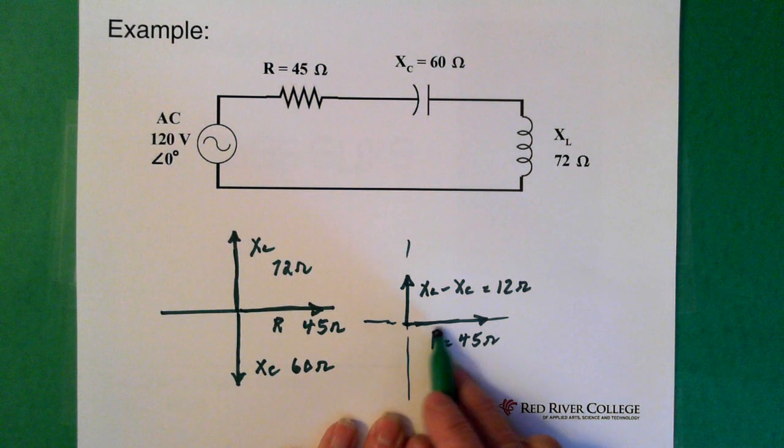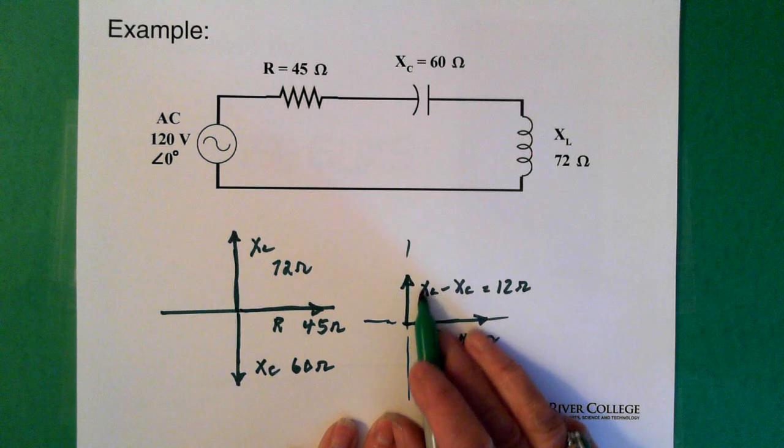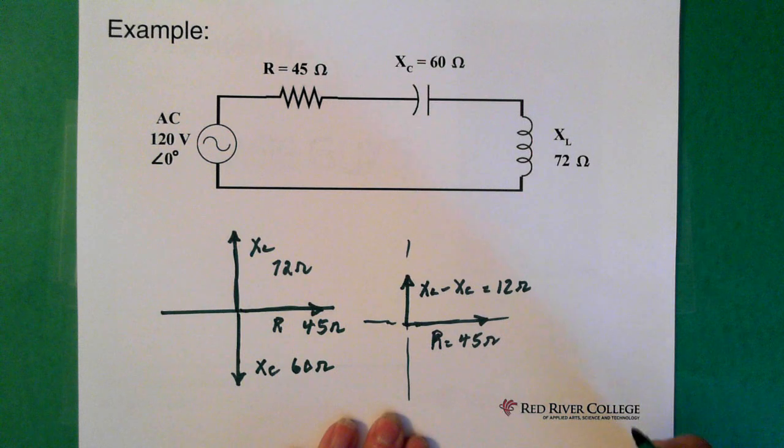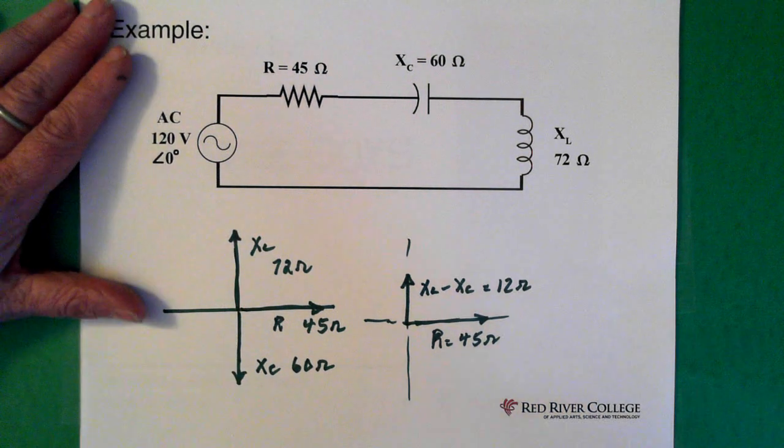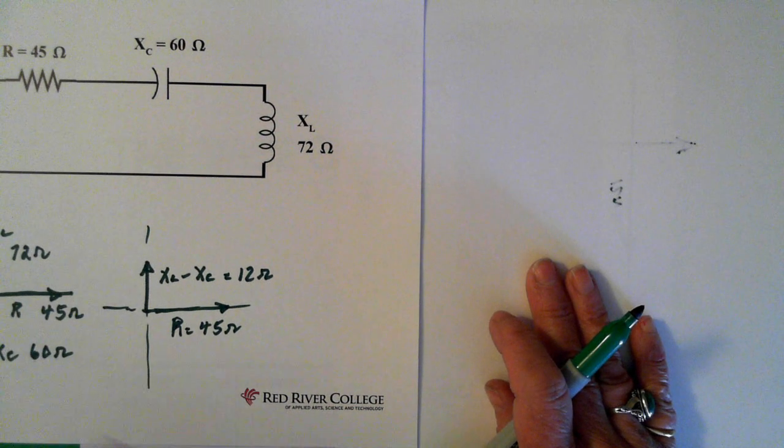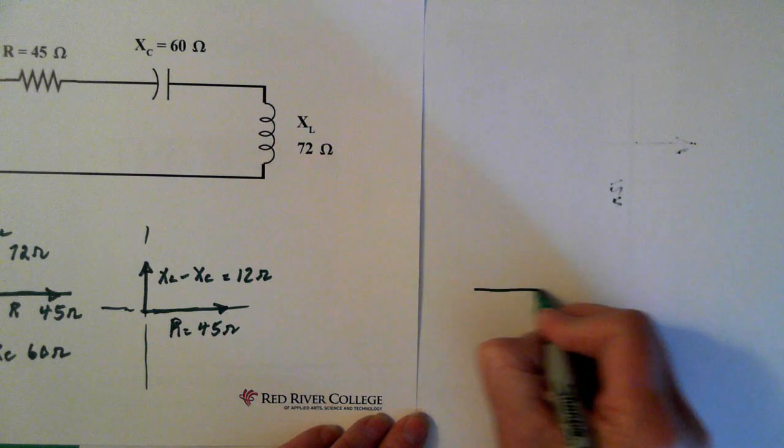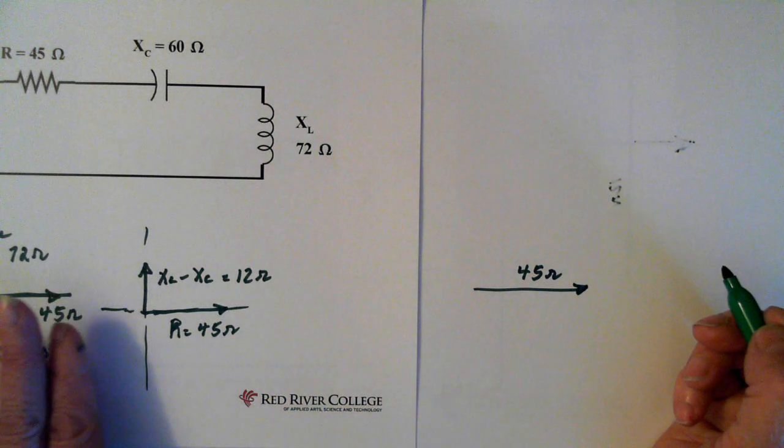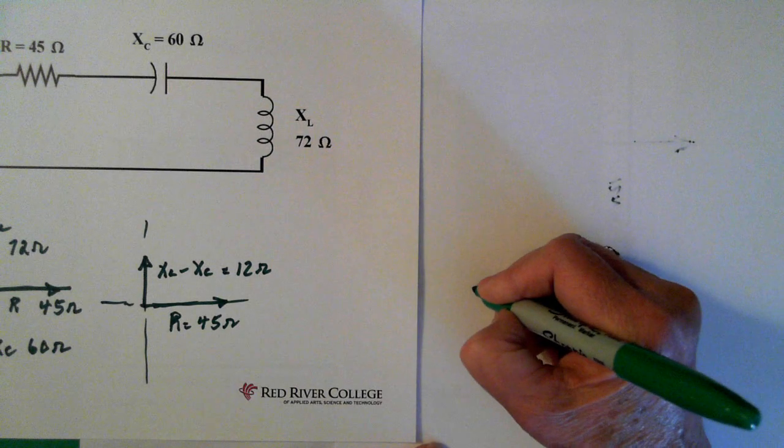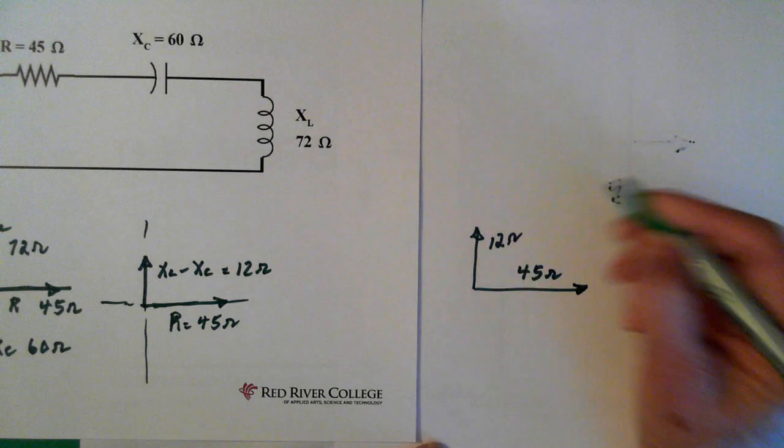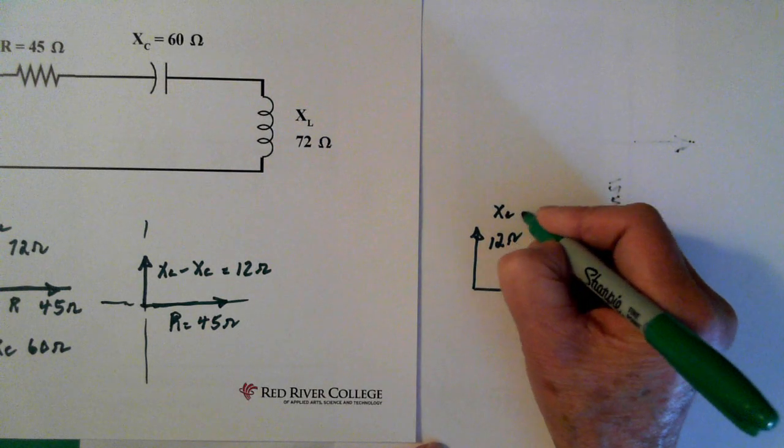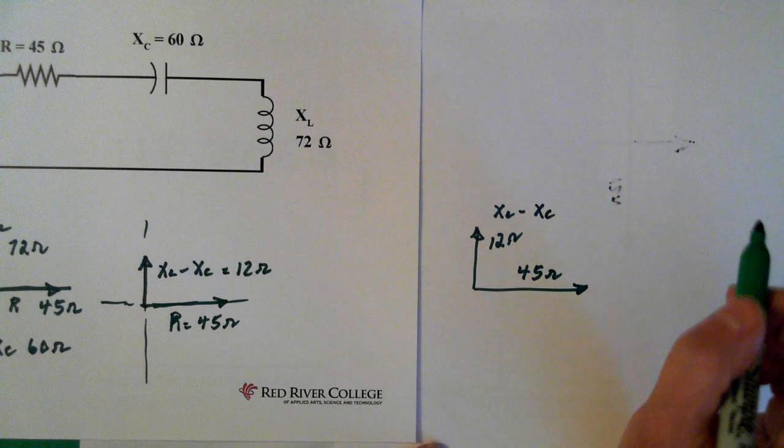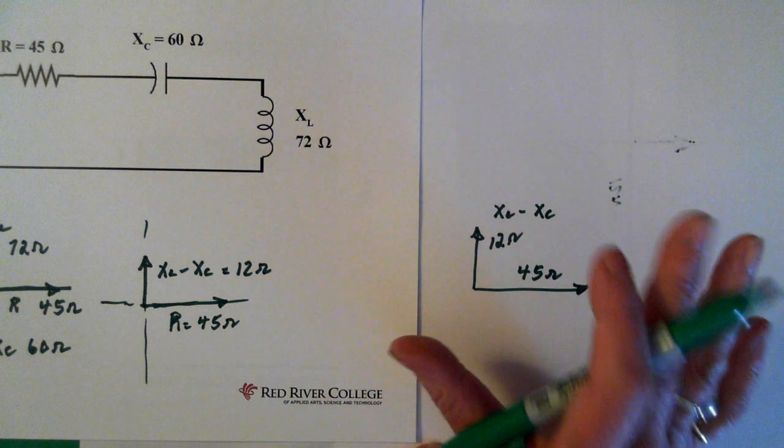So now we have 45 ohms here, we have 12 ohms here. So what we can do is solve for what's called the impedance. So essentially what we have is our 45 ohms, which is the resistance, and our 12 ohms, which is the sum of XL, so XL minus Xc. And what we want to solve for is the impedance, which is essentially the total resistance of this circuit.